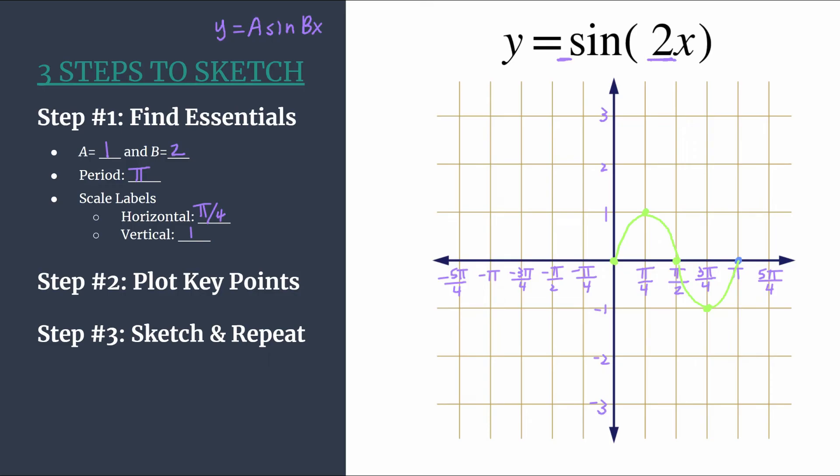So we draw our characteristic sine curve, and that is one cycle of sine. We can see that the length of the horizontal cycle is pi. So we should feel really good about that.